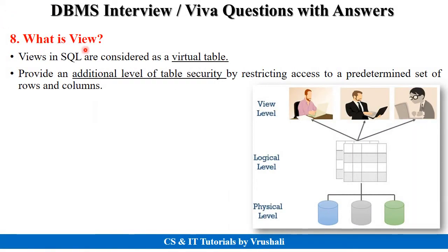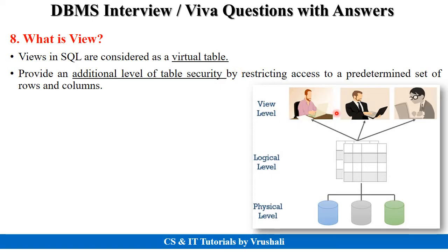The next question is: what exactly is a view? In SQL and DBMS, a view is considered a virtual table. There is a physical view — the view of the DBMS or database — and at the logical level, your logical view means the exact structure of the table. At the view level, there is only one table, but different authorized users have different views of the same table. This view provides an additional level of security and restrictions on the particular table.